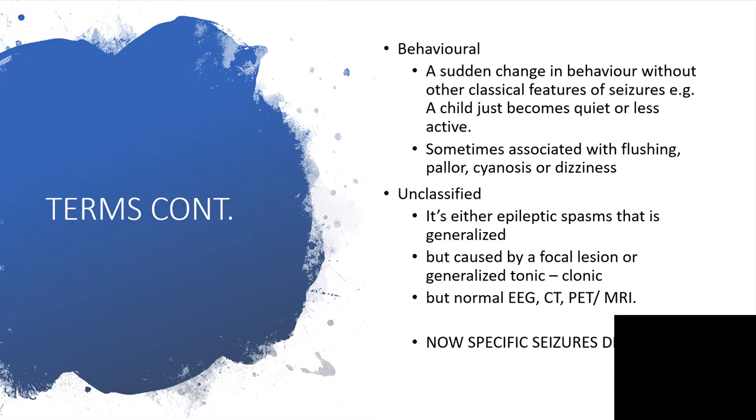The likelihood of having behavioral situations are associated with seizures. And that is going to be a sudden change in behavior without other clinical or classical features of seizures. For example, a child will just become unnecessarily quiet or less active. Or sometimes associated with flushing, pallor, cyanosis or dizziness.